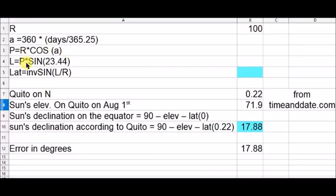First, the angle equals 360 multiply the days, they are 41, divided by 365.25. The angle is 40 degrees, 0.41.